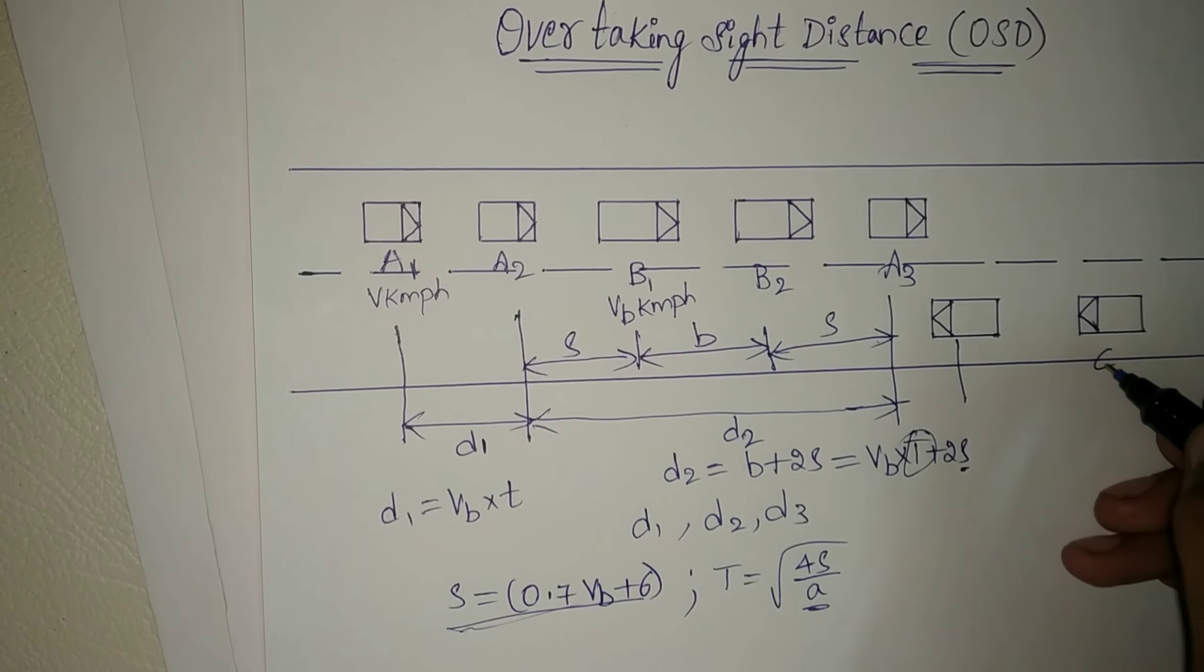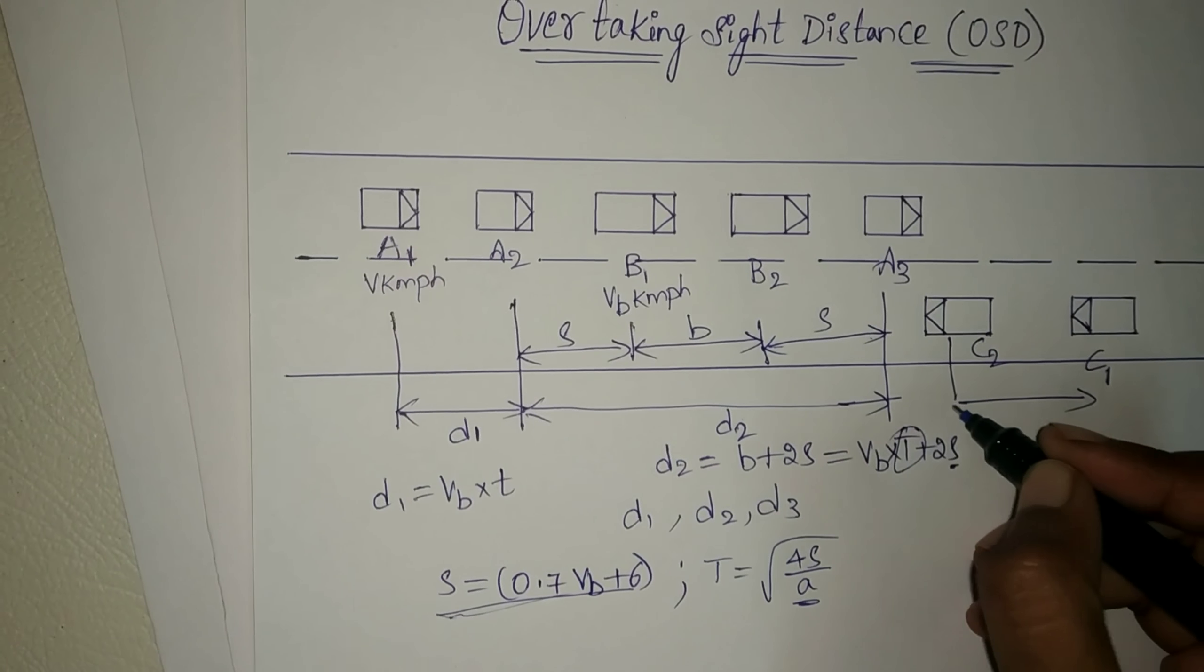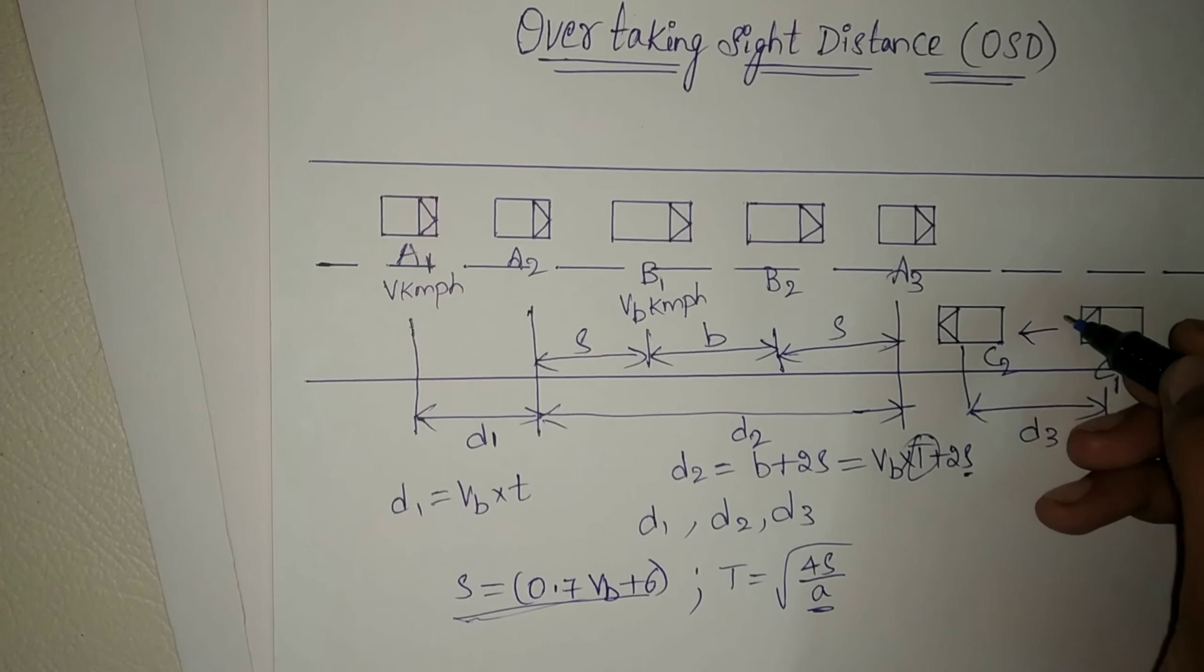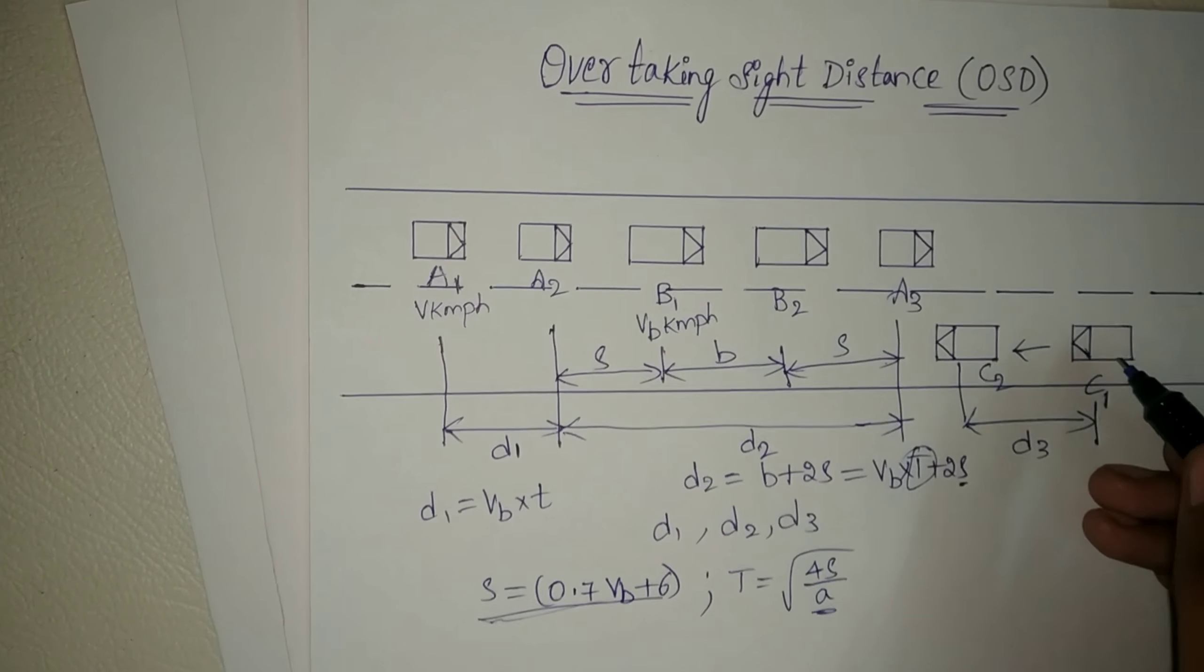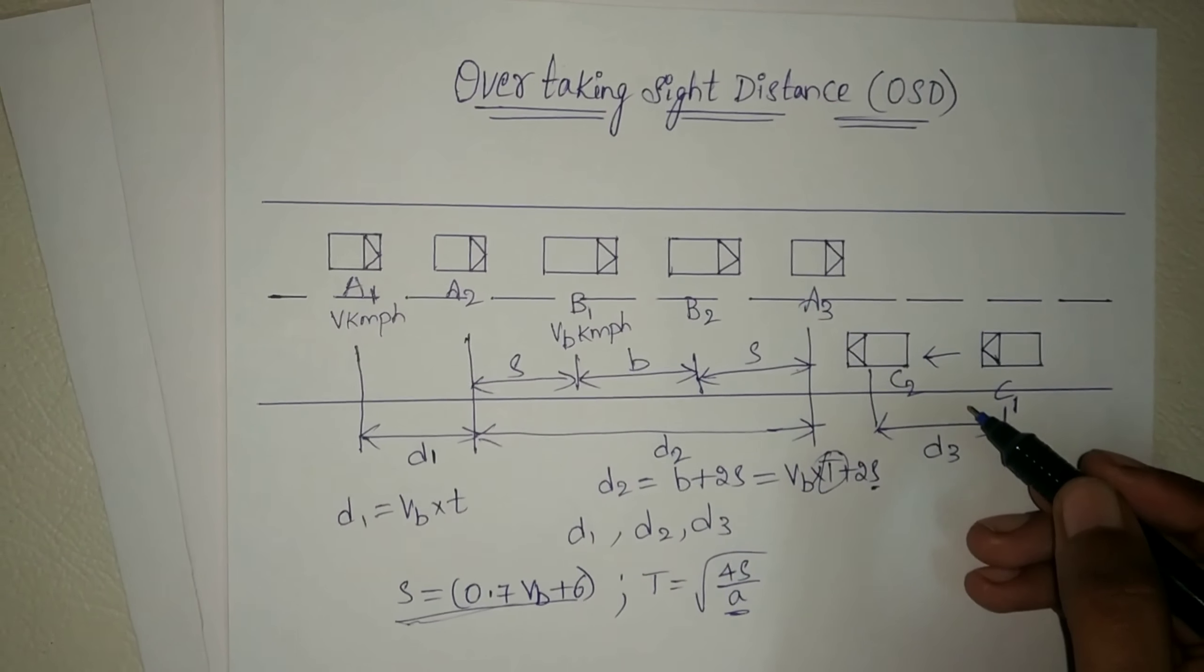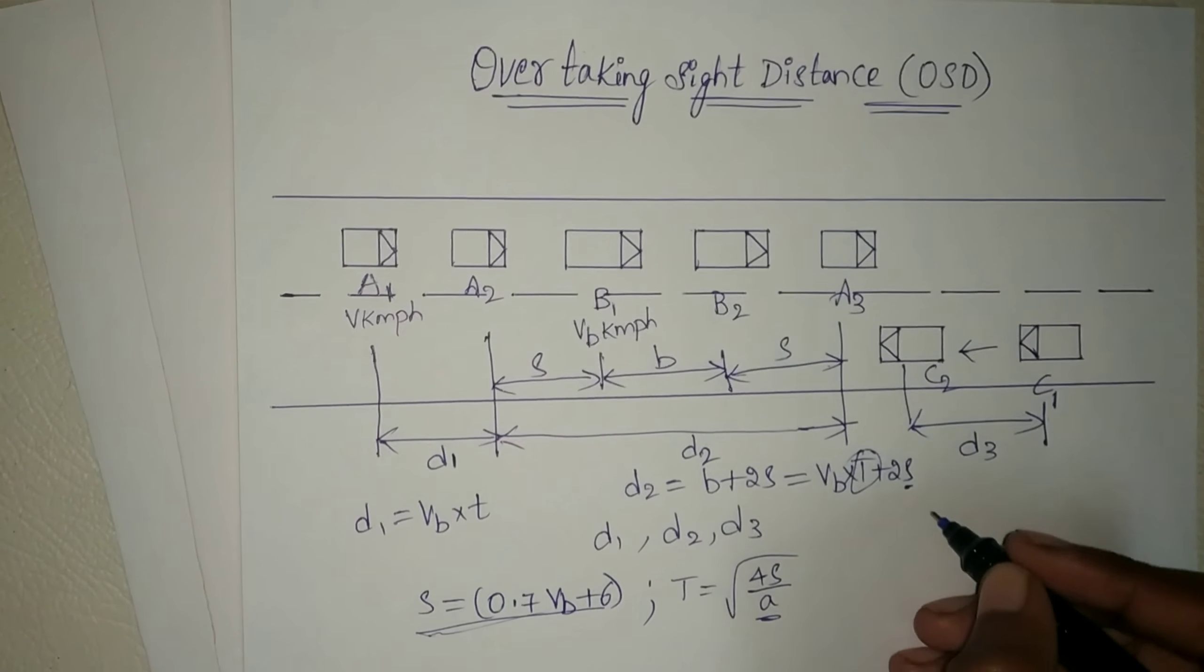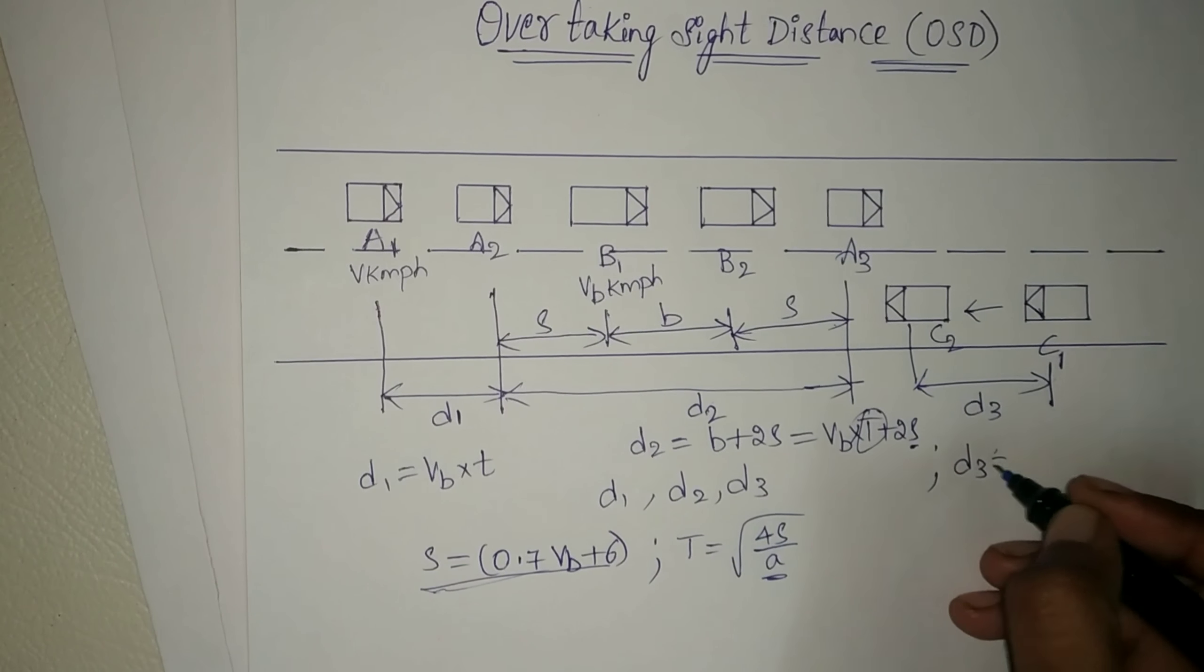d3 is the distance from position C1 to C2. d3 is the distance traveled by oncoming vehicle C during the actual overtaking operation of A during t seconds from position C1 to C2, where d3 is equal to V times t.